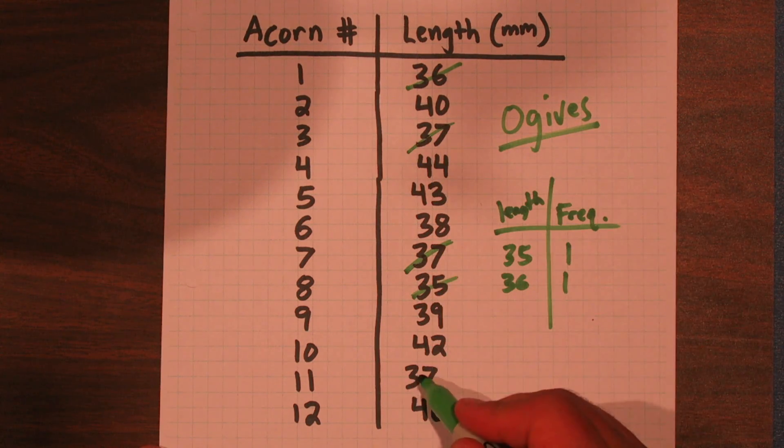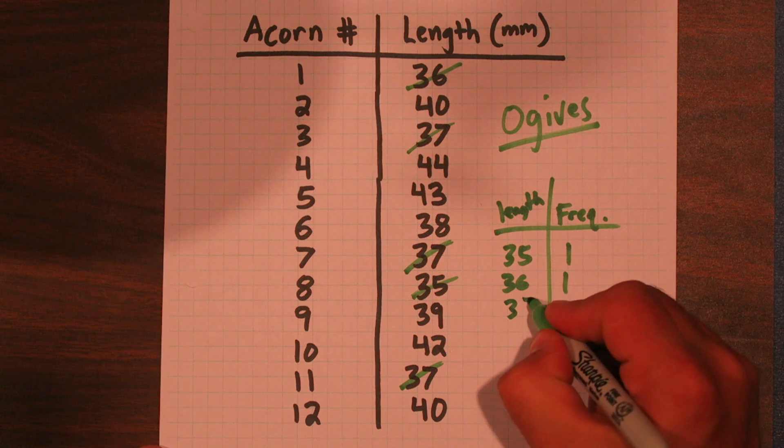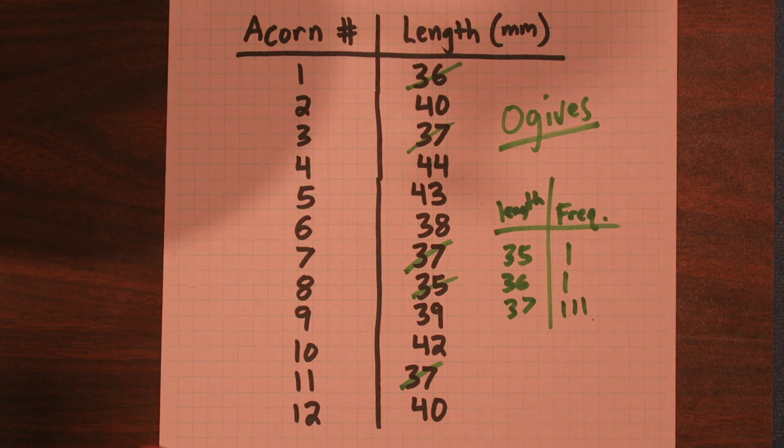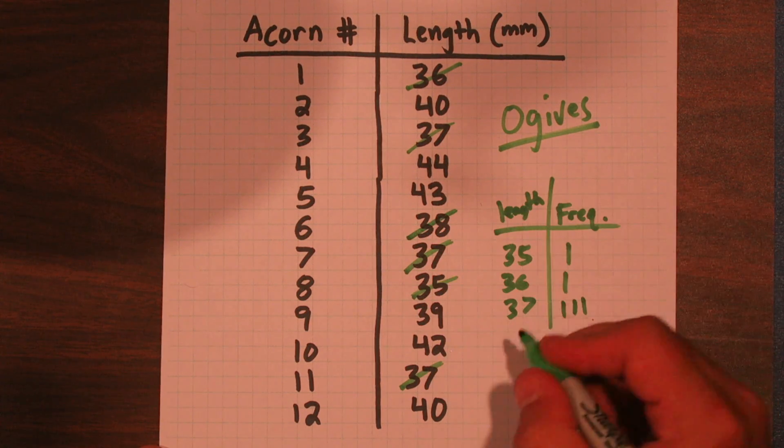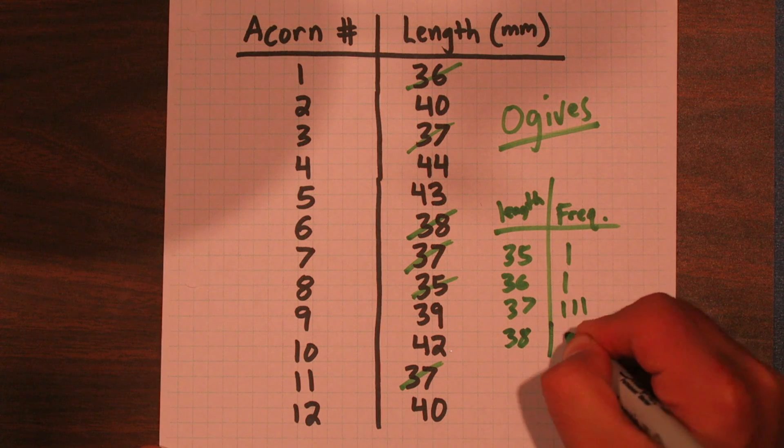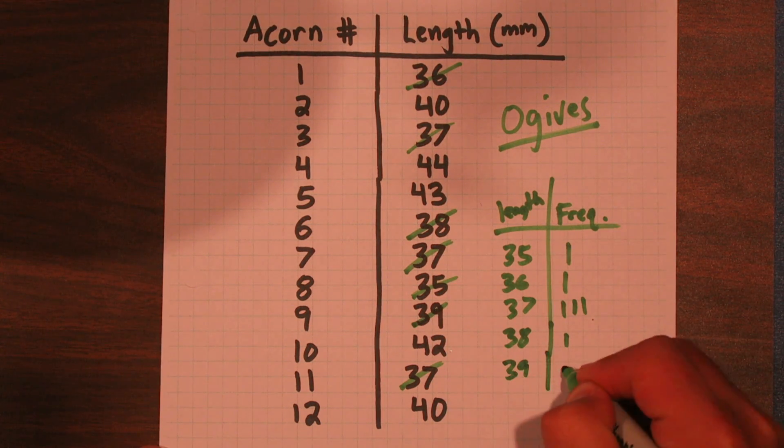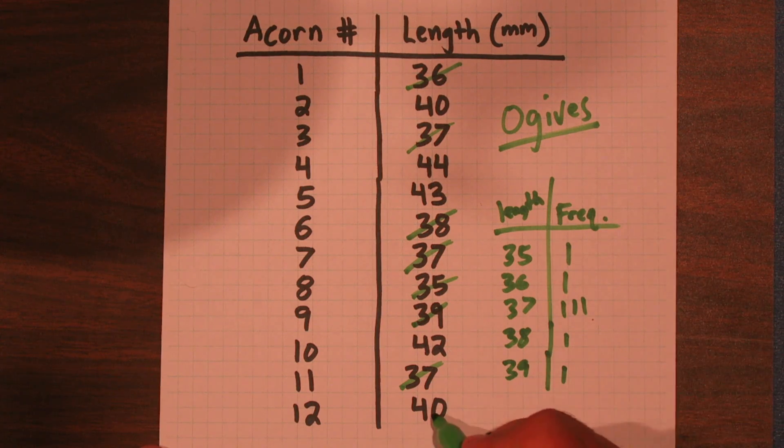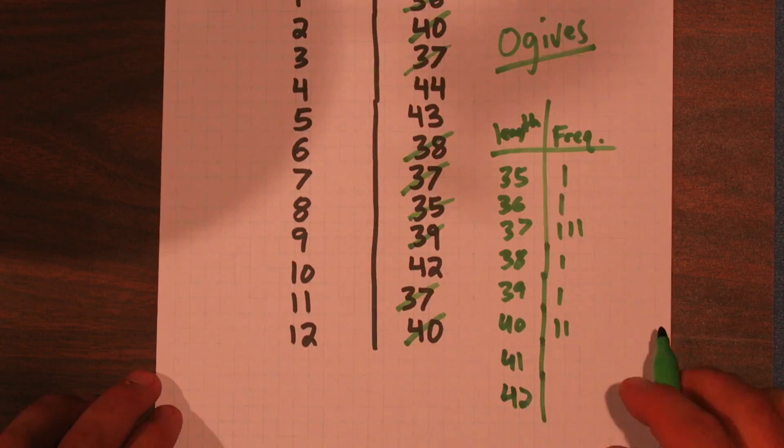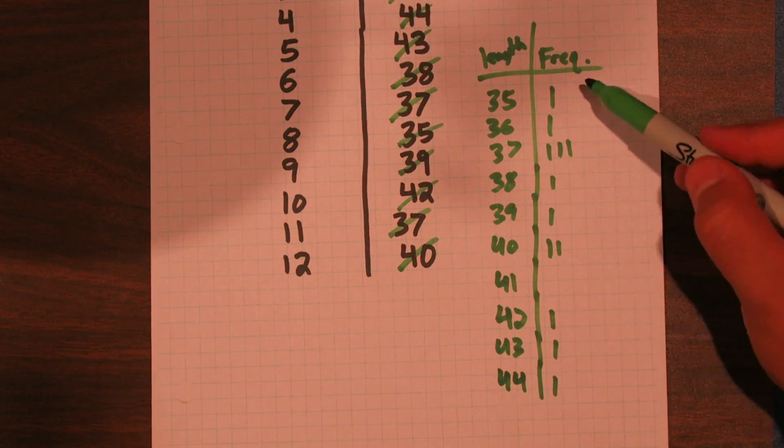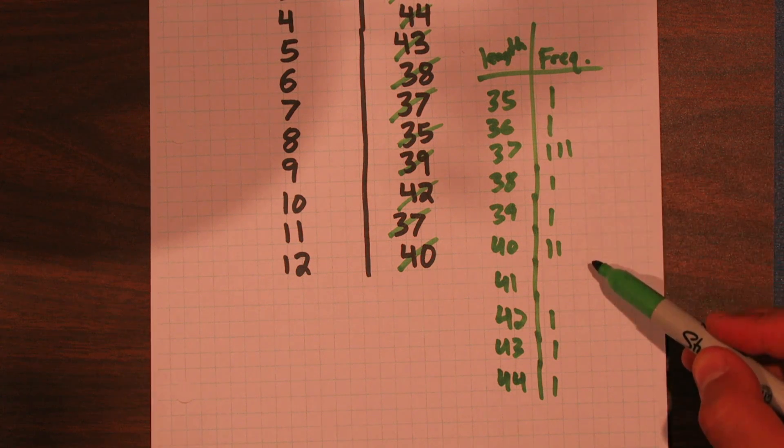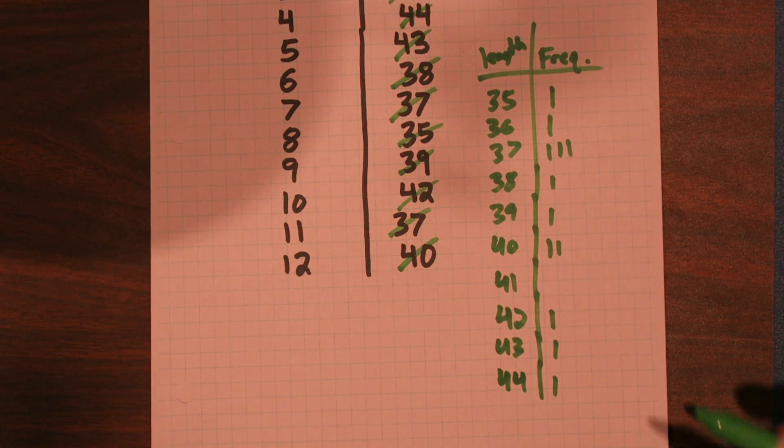There are three acorns that are 37. 38 looks like just one. 39 another one. I'll speed this part up. Now we have all of our frequencies for the different lengths we observed.